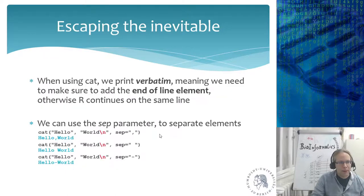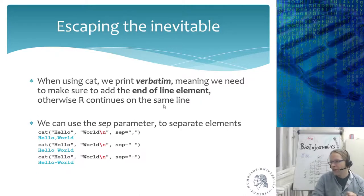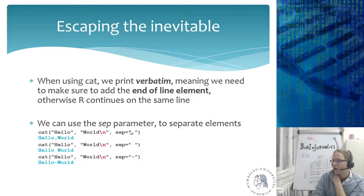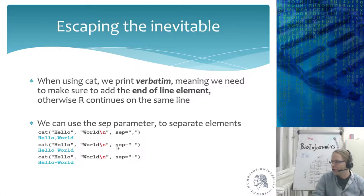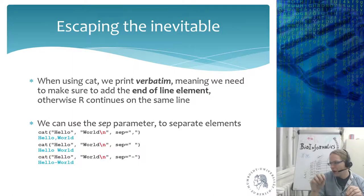Escape characters include \t for tabs, \n for new lines, \\ for backslash, and \b for backspace. When using cat(), you must add a newline (\n) explicitly, otherwise R continues on the same line. The sep argument in cat() lets you specify separators — for example, cat('hello', 'world', sep=',') prints 'hello,world'. This is useful for generating row names like 'individual_1' through 'individual_10' using paste('individual', 1:10, sep='').